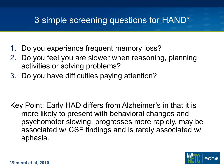You can also ask three simple screening questions: whether they have frequent memory loss, whether they feel slower when planning activities or solving problems, and whether they have difficulties paying attention. To differentiate HIV-associated dementia from Alzheimer's, remember that HIV-associated dementia is more likely to present with initial behavioral changes and psychomotor slowing, progresses more rapidly, and can be associated with CSF findings. It's not as associated with aphasia, whereas aphasia is an early feature of Alzheimer's disease.